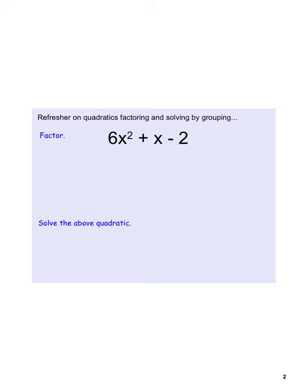We've discussed factoring second-degree polynomials previously. One method was grouping, also referred to as the AC method. In this case, A times C — where this is A and this is C — has a product of negative 12.